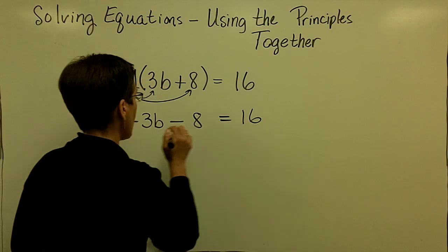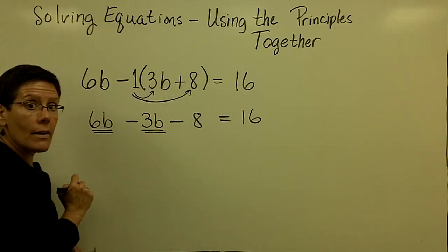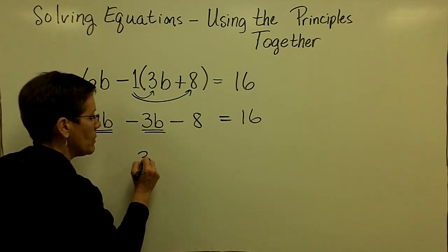And because there are three terms on this side of the equation, there must be some like terms. They are right there. 6B minus 3B is 3B.